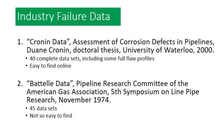I have two sets of industry failure data. One I'll call the Cronin data, from a doctoral thesis from the University of Waterloo in 2000. That data set has 40 complete data sets including some full flaw profiles. This data is easy to find online, so feel free to do a quick web search and find that thesis if you're a math nerd like I am. The second data set I call the Patel data, prepared by the Pipeline Research Committee of the American Gas Association back in 1974. This includes 45 data sets that would have been used to validate the original NG18 model way back in 1974.